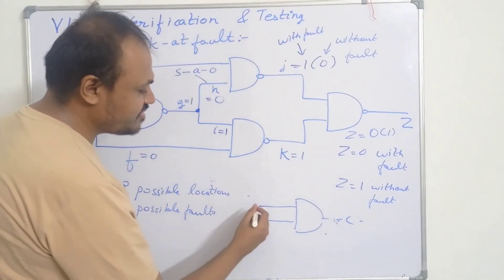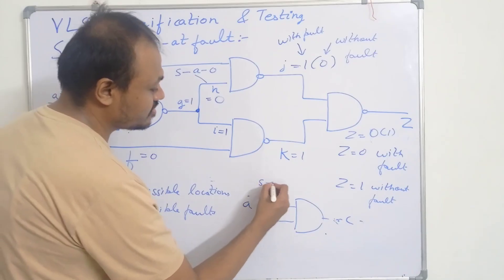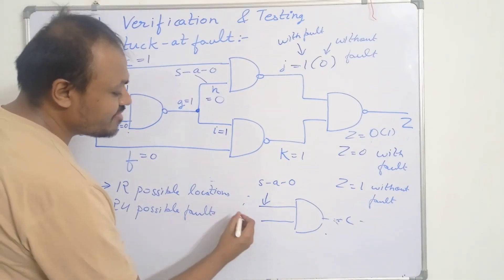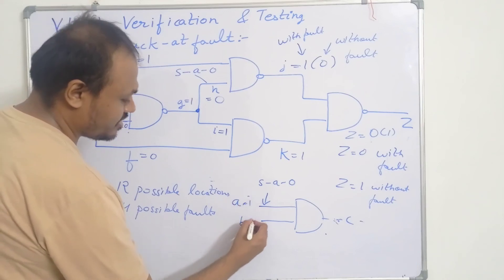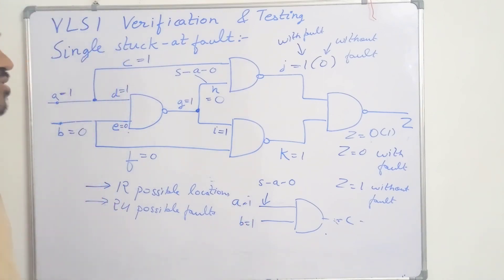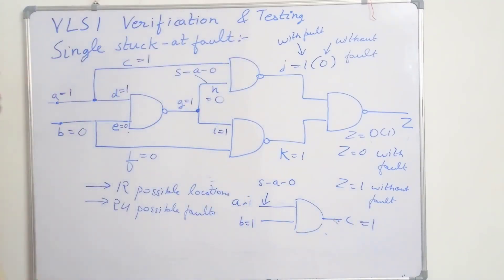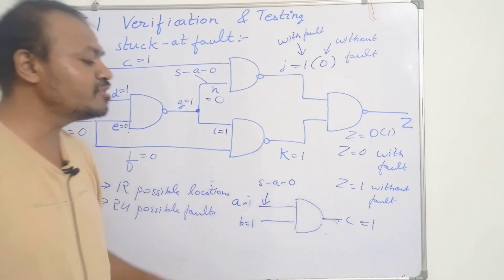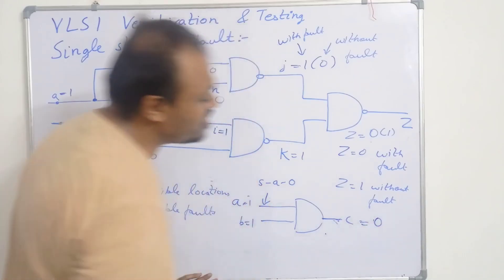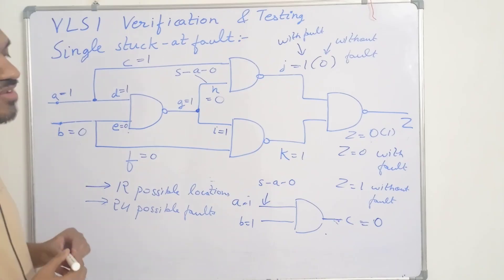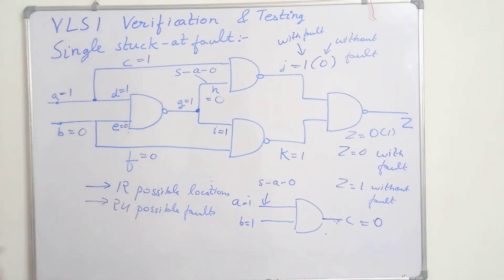If line A is stuck at 0, to check this we give input A equal to 1 and B equal to 1. The output C should be equal to 1 because both inputs of the AND gate are 1. But if this A line is stuck at 0, then the output will be 0, and we know that this line is at some fault. In this way, we can test the circuit for faults.